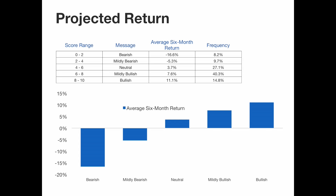A table shows the five different ranges of the model and for each the average return over the following six months. The bar chart shows deeply negative returns following bearish readings and a near-linear progression to positive returns following bullish readings. The model is currently reading 7.99 — almost 8 — putting us in the mildly bullish range, where historically the average six-month return has been 7.6%. If the model crosses the 8 line into the bullish range, the average six-month return expectation rises to 11.1%, which would be above average for a six-month timeframe.